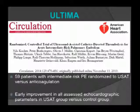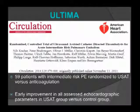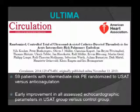The ULTIMA trial directly studied the submassive category: 59 patients with intermediate-risk PE randomized to either ultrasound-assisted catheter-directed thrombolysis versus anticoagulation alone, with echocardiographic evaluation at 24 hours. Nearly every parameter showed resolution — RV/LV ratio and right heart function and pressures — demonstrating phenomenal outcomes in this cohort, with additional smaller trials showing similarly impressive results.